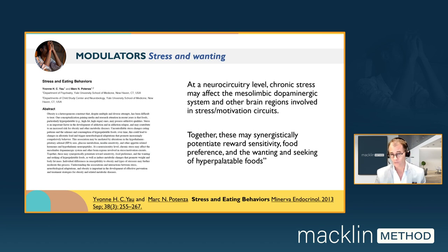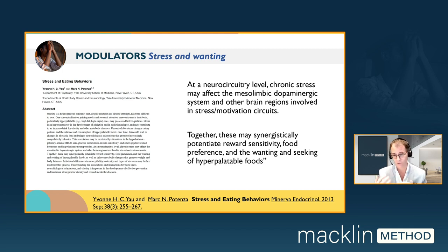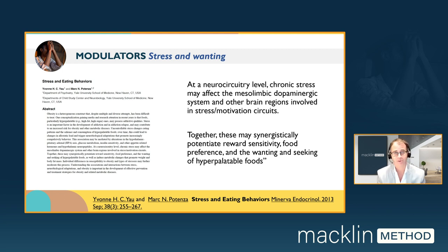Regarding stress and wanting: a key review paper describes that at a neurocircuitry level, chronic stress can affect mesolimbic dopaminergic — that's the wanting circuitry — and other brain regions involved in the stress motivation circuits. Together, these synergistically potentiate reward sensitivity, food preferences, and wanting, and the seeking of hyperpalatable foods. Stress up-modulates wanting.